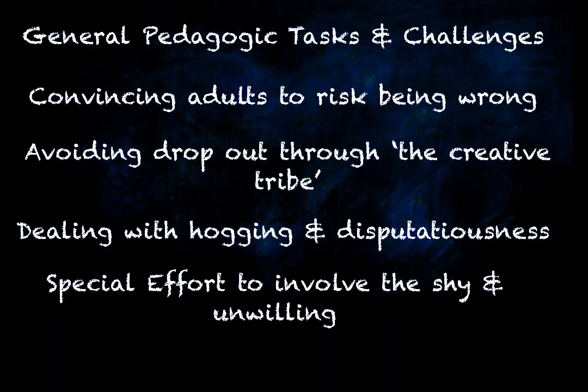Your general pedagogic tasks and challenges in the second phase include convincing adults to risk being wrong. Try to get them to share their pieces, accept feedback, and understand that writing is a process of constant improvement. They'll continually introduce their pieces by saying 'This is rubbish' or 'That's terrible' — I ban that, because that's up to the rest of us to decide, not them. Even that little act of banning self-deprecation makes them feel better about it.